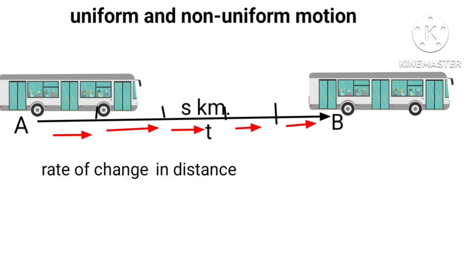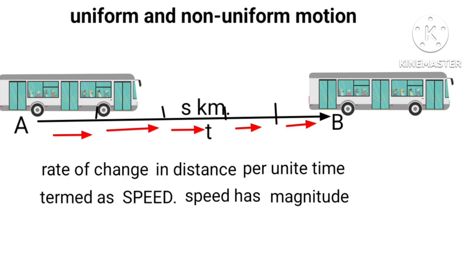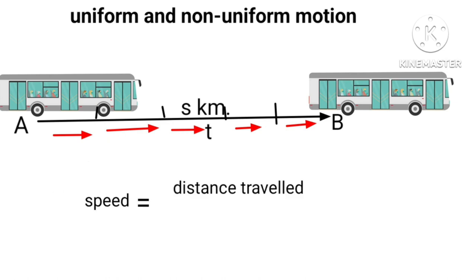Motion can be measured as rate of change in distance per unit time, termed as speed. Speed has magnitude but no direction. Mathematically written as speed equals distance traveled upon time taken. SI unit of speed is meter and is a scalar quantity.